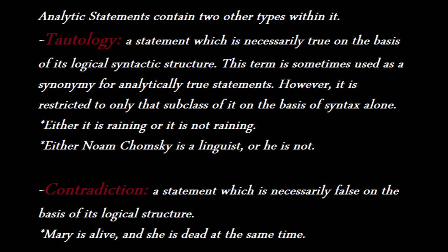For example, we can say: either it is raining or it is not raining. Or, either Chomsky is a linguist or he is not. On the other hand, we have contradictions. A contradiction is a statement which is necessarily false on the basis of its logical structure.